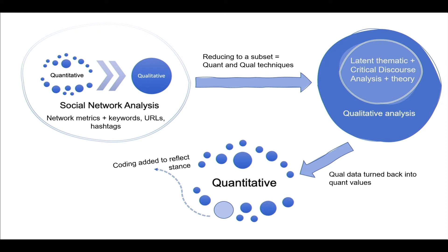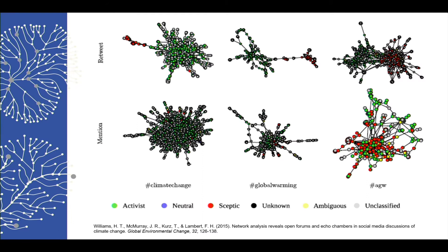If we want to take this integrated approach a step further, we could then code this qualitative data back into the network to further enhance our understanding of connection and disconnection in relation to attitudes and online behaviour. There are a few ways to do this. One example is from Williams and colleagues who coded Twitter users' attitudes to climate change into the network clusters and compared these attitudes to patterns of interacting.